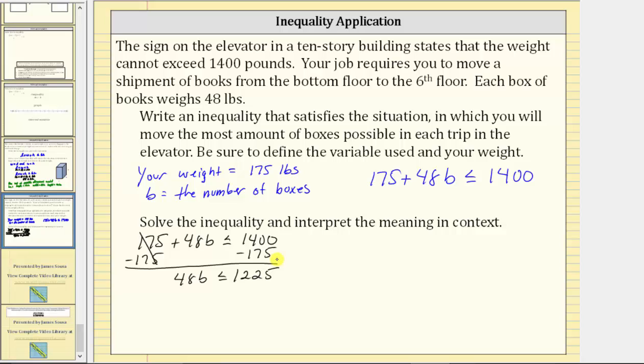The next step is to multiply or divide to isolate the variable and solve the inequality. 48b means 48 times b. To undo this multiplication, we divide both sides by 48. Simplifying, 48 divided by 48 is equal to one. One times b is b. B is less than or equal to this quotient here. Let's find the quotient here on the side.